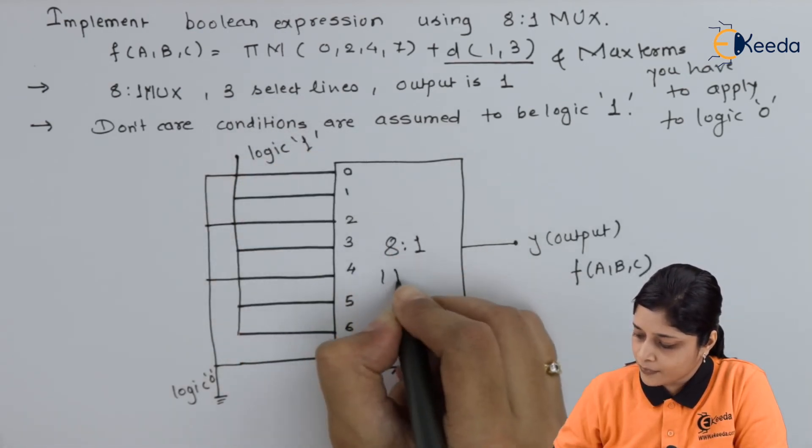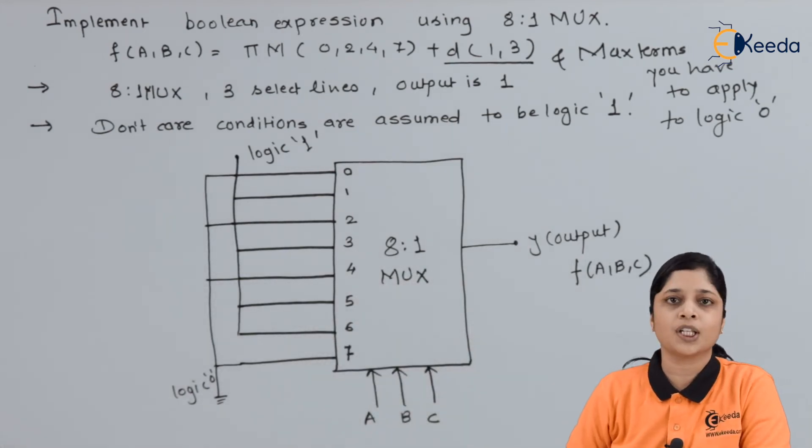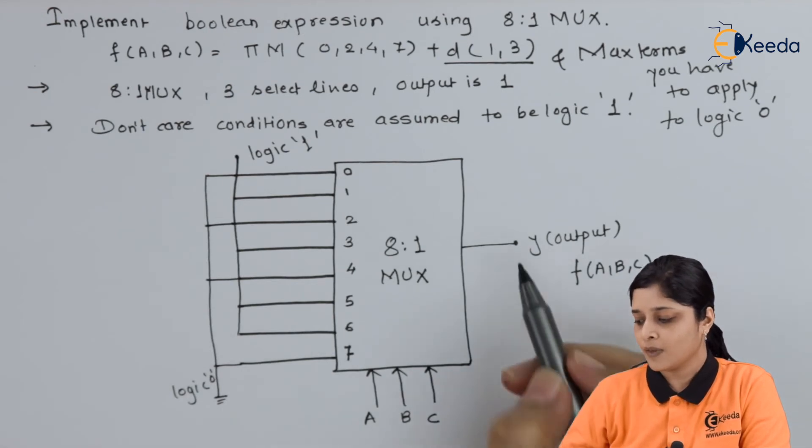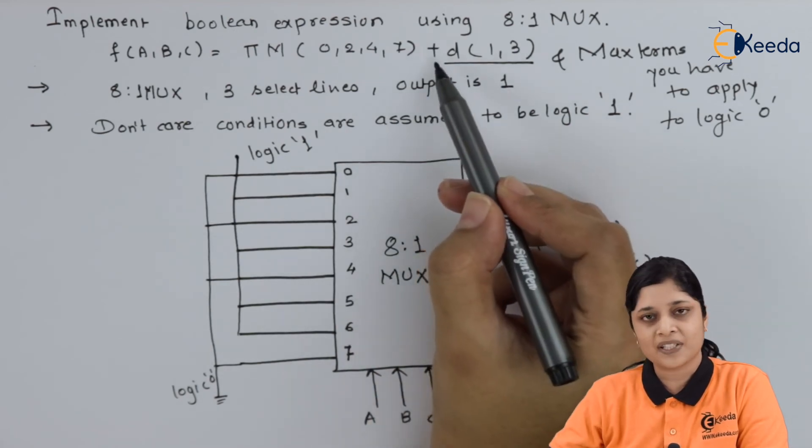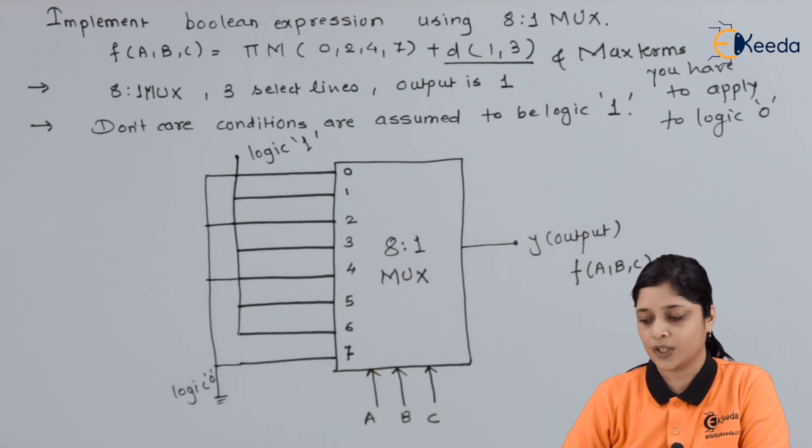In such a way you have to design 8 is to 1 MUX having don't care conditions. It has three select lines, one output. Here max terms are present, so logic is connect to logic 0 and remaining terms to logic 1.